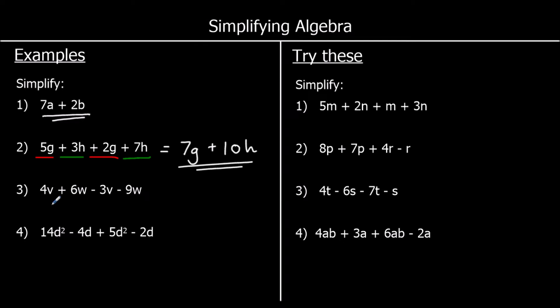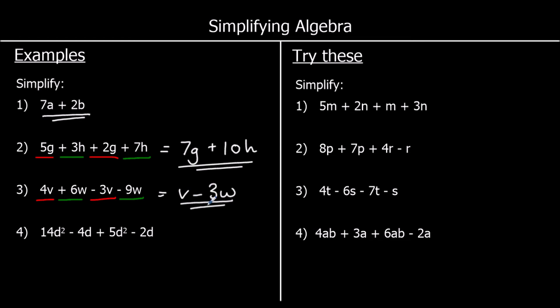Question 3: we've got 4v and negative 3v, and we've got 6w and negative 9w. We're always looking at the sign in front of the term. For the v terms: 4v take away 3v is 1v — we don't write 1v, we just write v. For the w terms: 6 take away 9 goes to negative 3, so 6w take away 9w is negative 3w. We write the answer as v take away 3w.